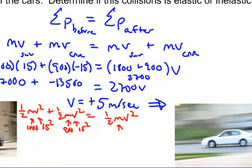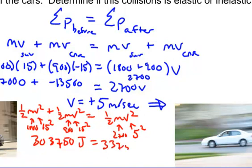And you're going to plug in your 2700 here, because that's your total mass. And they're both going 5 meters per second and we're going to square it. And we end up doing that. We end up adding up everything on our left hand side. We end up getting 303,750 joules of energy. On this side, we have 33,750 joules. Was energy conserved?